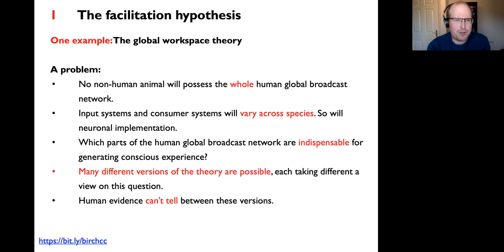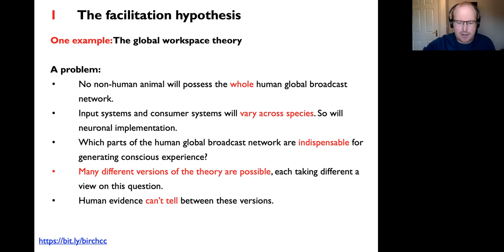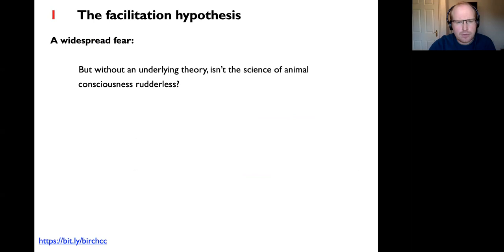Similar points can be made for Integrated Information Theory. Just consider the crucial threshold of phi you take to be sufficient for consciousness—if any non-zero phi is enough, you have to be incredibly liberal in attributing consciousness, including to thermostats and diodes. If there's a critical threshold, there are many different versions of the theory setting different thresholds. So the strategy outlined by Dennett—first use human evidence to find the right theory, then simply apply it—just doesn't seem like it's going to work.